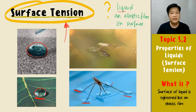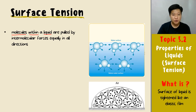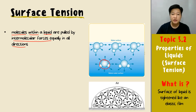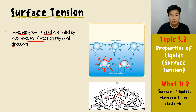Why can liquid have an elastic film on the surface? In a liquid, molecules within the bulk are pulled by intermolecular forces equally in all directions, because they are surrounded by other molecules on all sides. So a molecule located in the center of the liquid experiences intermolecular forces from all directions and the forces are balanced.